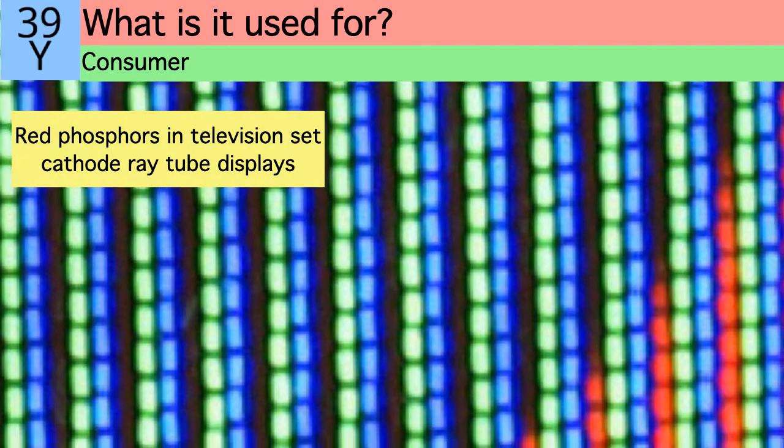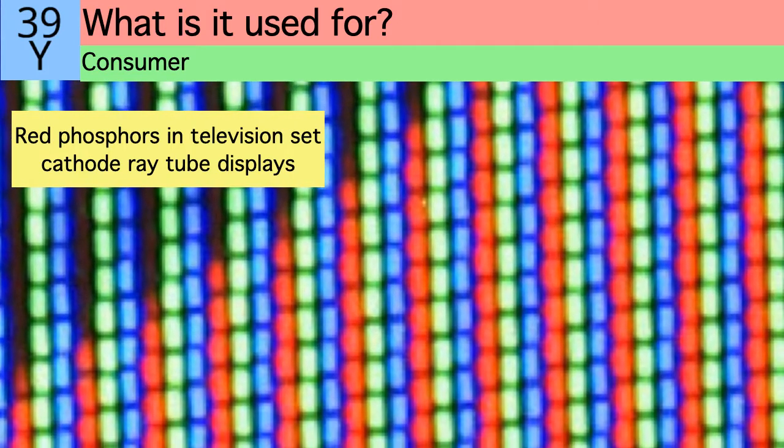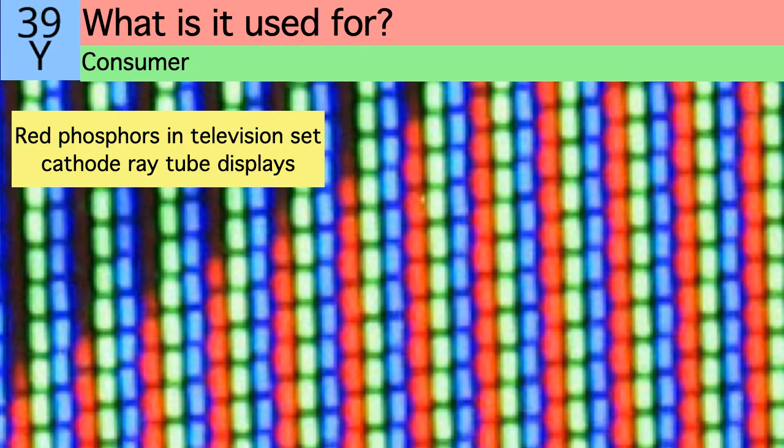One of the most important uses are LEDs and phosphors, particularly the red phosphors in television set cathode ray tube displays. The red component is emitted from a lattice doped with europium.